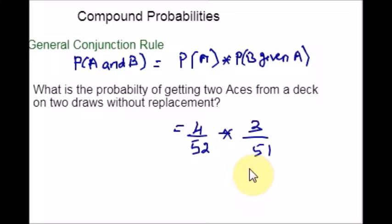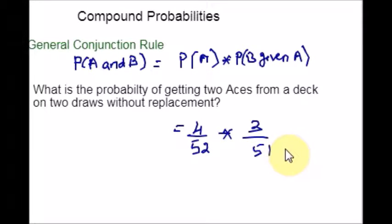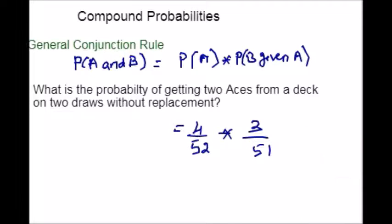You just multiply the fractions: 12 over 2652, which simplifies to 1 over 221.